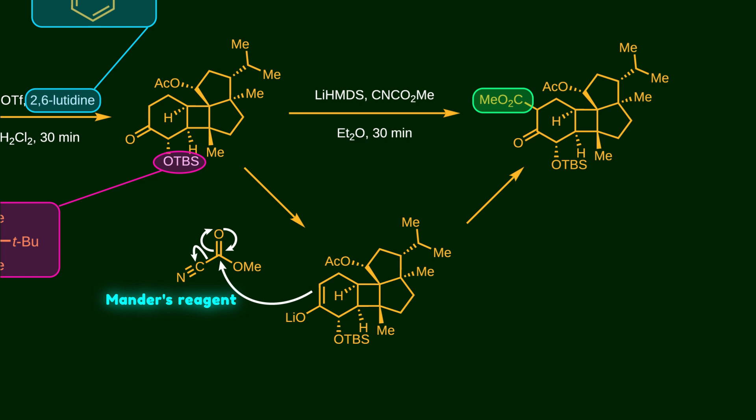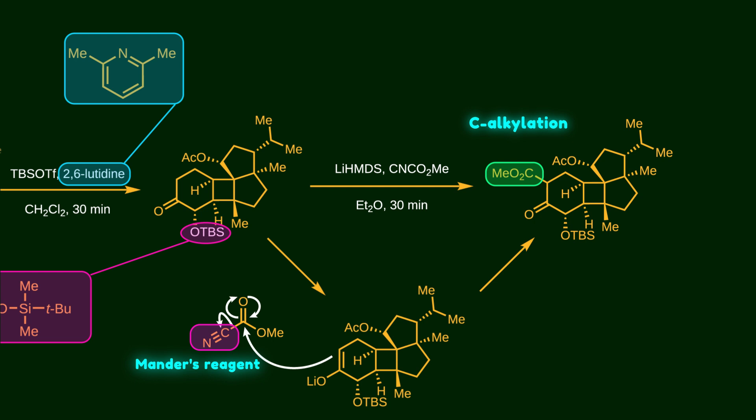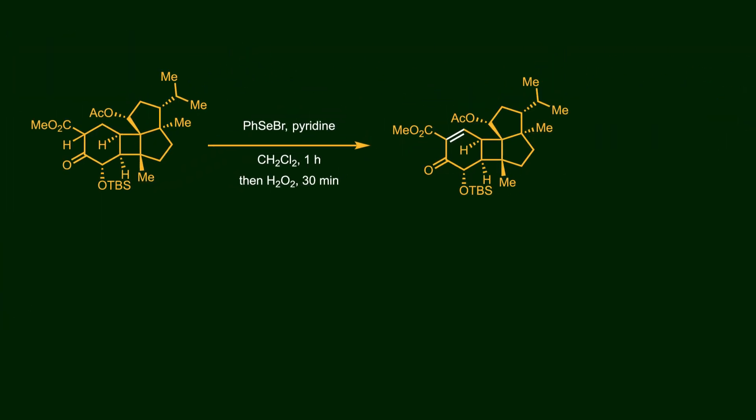The ester is introduced into the molecule through an addition-elimination reaction. And notice that the cyanide is a much better leaving group than the methoxy group. Using Mander's reagent gives us control over C-alkylation. Other reagents like acyl halides or anhydrides usually give a mixture of O- and C-alkylation.